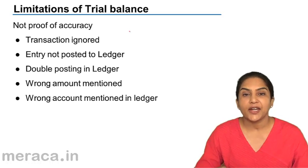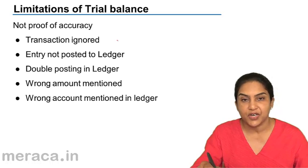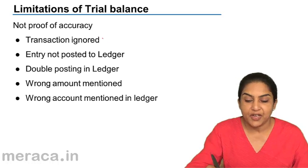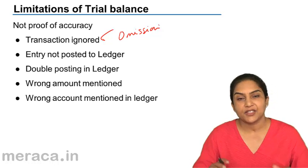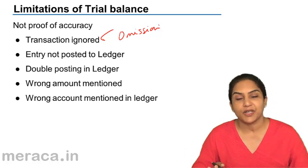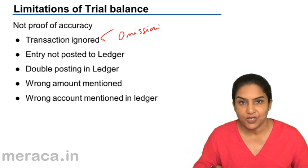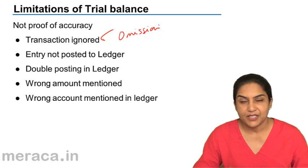But frankly, it is not entirely a proof of accuracy, and that is its biggest disadvantage. Suppose an entire transaction is left out — it is not reflected in the trial balance. The trial balance will still tally because both the debit and the credit are left out.